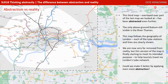This third map, overlaid over part of the last map we looked at, has been abstracted even further. The only above-ground feature still visible is the River Thames. This map follows the geography of London and each of the Tube stations and lines are clearly shown. We are now very far removed from reality, but this version of the map is finally starting to meet its intended purpose — to help tourists travel via London's Tube network. So could we make it even better by applying even more abstraction?